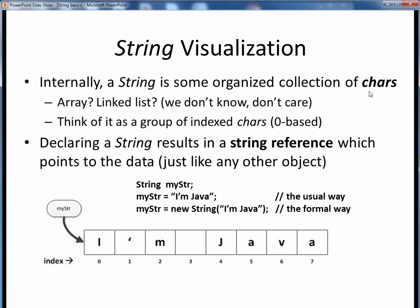You'll commonly see Strings represented, as shown here, as a zero-based group of indexed chars. You can think of there being an array of individual cells, each one containing one char, and each cell having a zero-based index value.